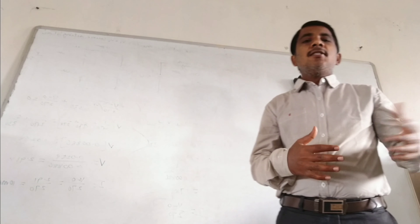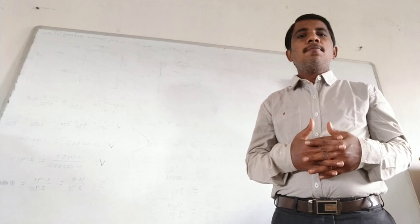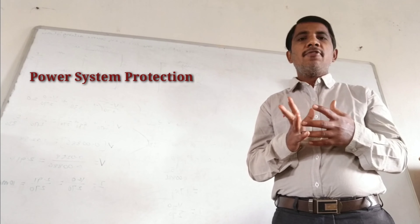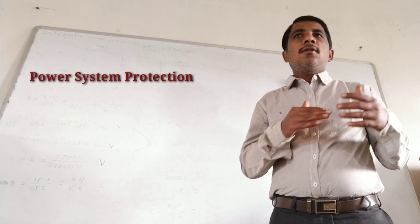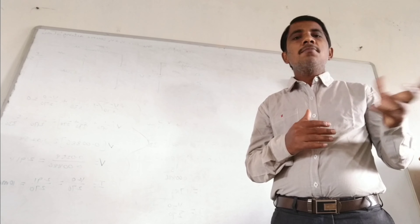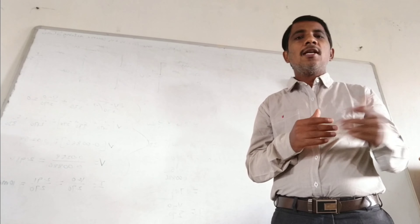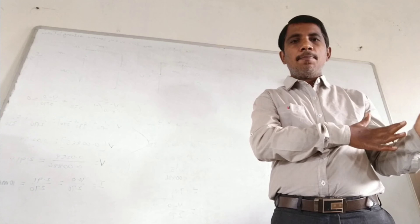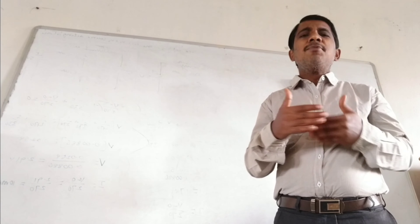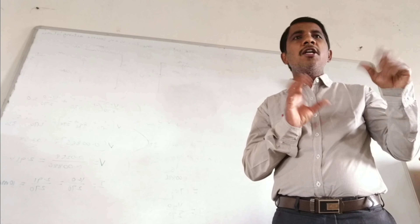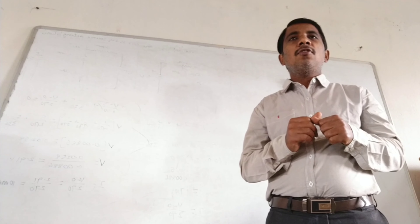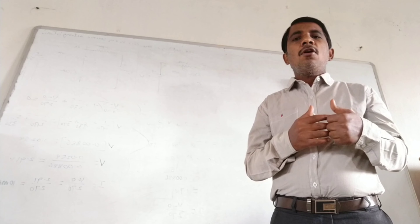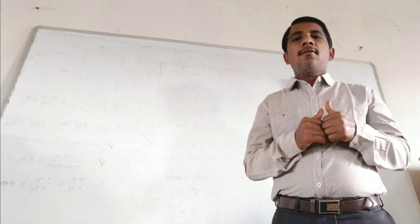Good morning everyone. In the previous classes we discussed electrical power system protection, and basic concepts about relays. We studied various types of relays, terms related to relays, and properties of relays. A relay is basically a device which senses the fault and initiates the circuit breaker to trip. We studied electromechanical relays - attracted armature type, balance beam type, and induction type relays.